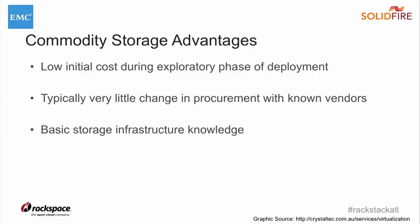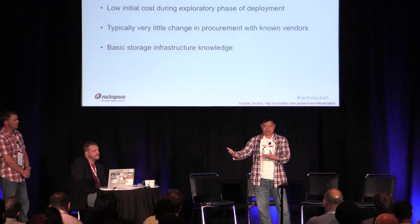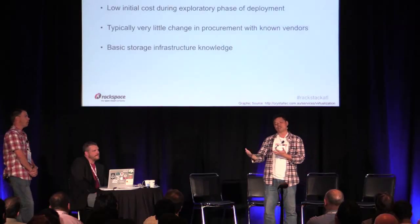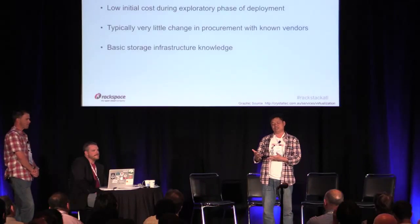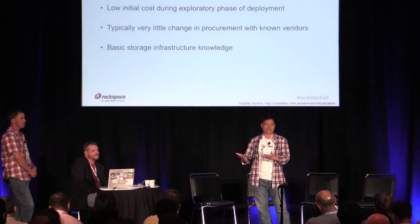The advantages of commodity storage: the initial cost is fairly low. If you only need, say, two terabytes, rather than buying a big storage array, you can just buy a Dell server, HP server, or even a white-box server, put the Cinder volume service on it, and now you have a storage array. The server team running the OpenStack deployment doesn't have to go to a separate storage team to procure resources. The reference implementation for Cinder with commodity storage uses LVM, so if you have a Linux admin — who's typically running OpenStack — they can set up a Cinder volume fairly easily.